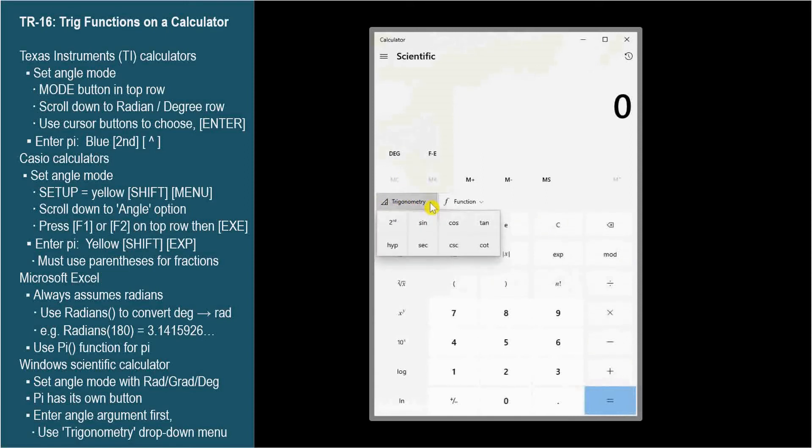The trig functions are all in this dropdown list, named trigonometry. But, with this calculator, we need to enter the argument first. So, to find sine 30 degrees, enter 30. Then, trig dropdown, and click sine. The answer, 0.5, is displayed.